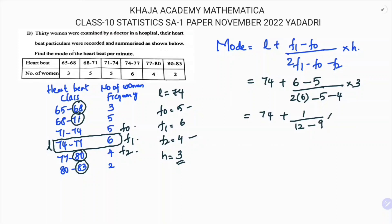74 plus 1 by 3 times 3. Here 3 and 3 get cancelled, so 74 plus 1. So the mode heartbeat of the women in this problem is 75. The mode is 75.